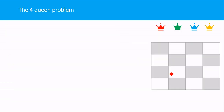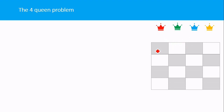Now let us look at the 4-Queens problem, which was introduced in a previous lecture. Here we have to place four queens on a 4x4 chessboard. We assume the first queen is placed in the first row, the second queen in the second row, and so on. We need to find only which column to place each queen so that they do not attack each other.